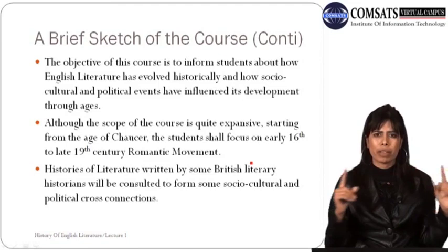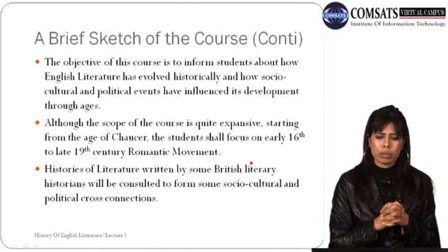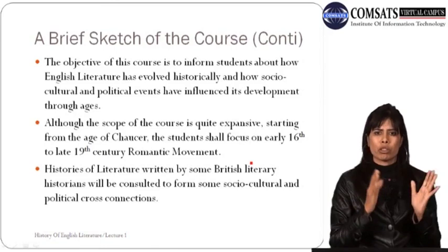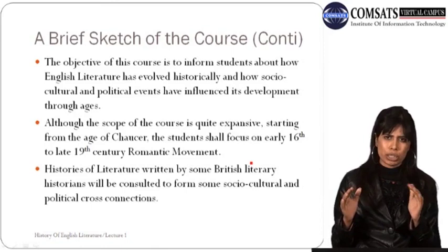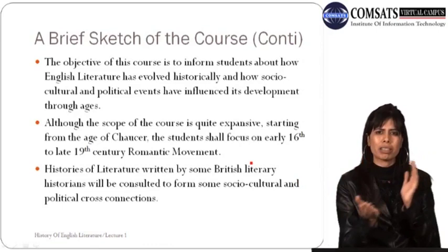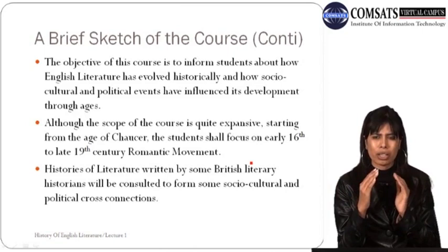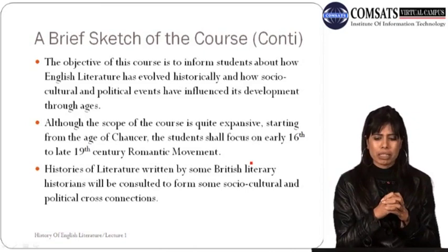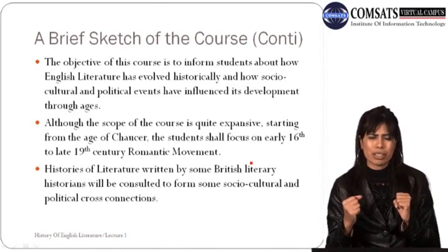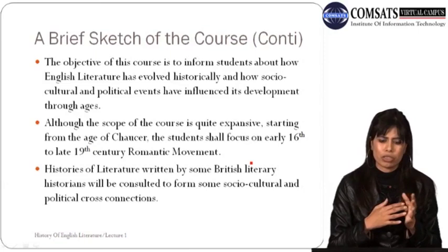Although the scope of the course is quite expansive, starting from the Age of Chaucer, students shall focus on the early 16th to late 19th century Romantic Movement. We will gradually move from the Age of Chaucer towards 19th century literature. Histories of literature written by British literary historians will be consulted to form socio-cultural and political cross-connections.